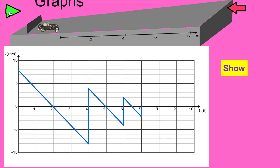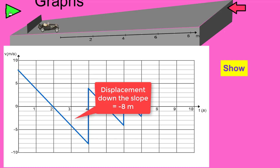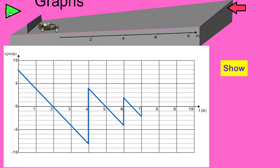The car travels eight meters up the slope, then rolls back down again and gets back to the rubber sheet, so its displacement down the way is minus eight meters. The whole journey has zero net displacement. Then there's the bounce — after the bounce the car ends up with a velocity going up the slope of four meters per second, which is gradually reduced to zero meters per second after one second, and then it rolls back down again.